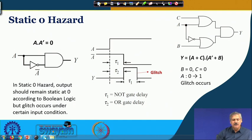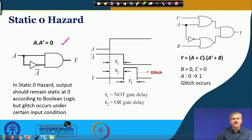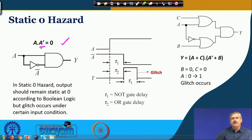In Static-0 Hazard, the Boolean expression for certain input combinations reduces to an expression like a times a-prime, which should generate 0 as far as the logic of the circuit is concerned. But because of the finite propagation delay in generating the NOT gate output, there is a glitch — a positive-going pulse.